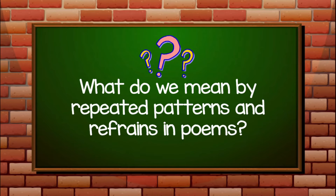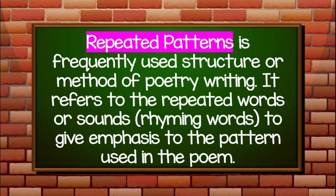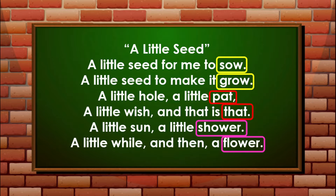Now, what do we mean by repeated patterns and refrains in poems? Repeated patterns is a frequently used structure or method of poetry writing. It refers to the repeated words, sounds, or rhyming words to give emphasis to the pattern used in the poem. Now, let us go back to the poem from our first activity, 'A Little Seed.' What have you noticed with the pair of words that are boxed? They are rhyming words.